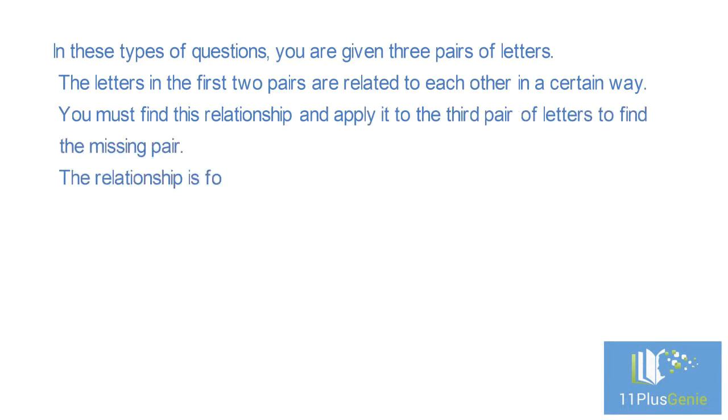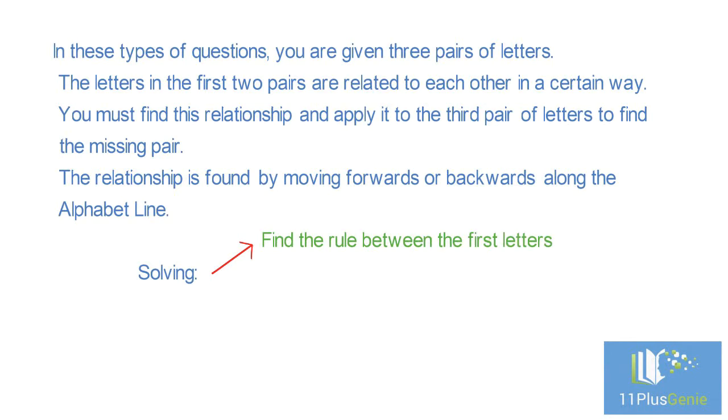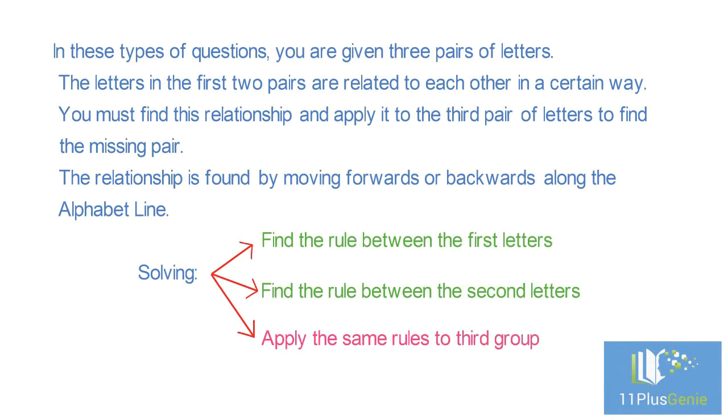The relationship is found by moving forwards or backwards along the alphabet line. The usual method is to work out how the first letter of the first pair relates to the first letter of the second pair. Apply those same rules to the third pair to find your answer.